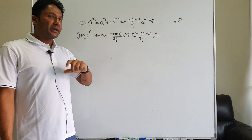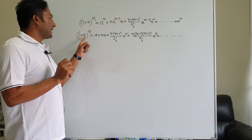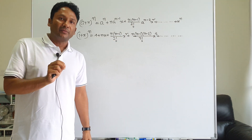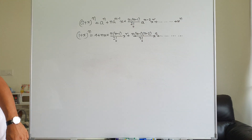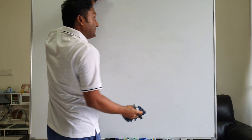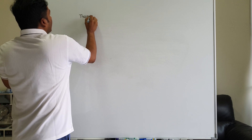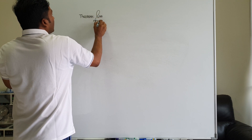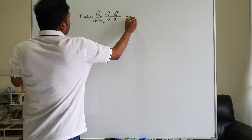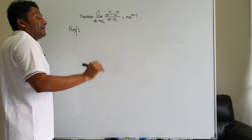So, if you want to add a formula to this formula, then you can apply it. This is very important. Let x be equal to a plus a to the power n divided by x minus a, n to the power (n-1). This is the method of substitution.